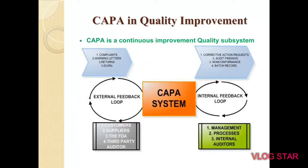CAPA is a quality improvement system performed through two loop pathways: the internal loop pathway and the external loop pathway. The corrective action requirements are fulfilled through audit findings, non-conformance findings, batch review, management review (process review), and internal audit. The external feedback loop is also very important for improving the quality management system. It includes complaints, warning letters, returns, and third-party audits. These are the external feedback loops through which the quality system is developed and improved on a day-by-day basis.